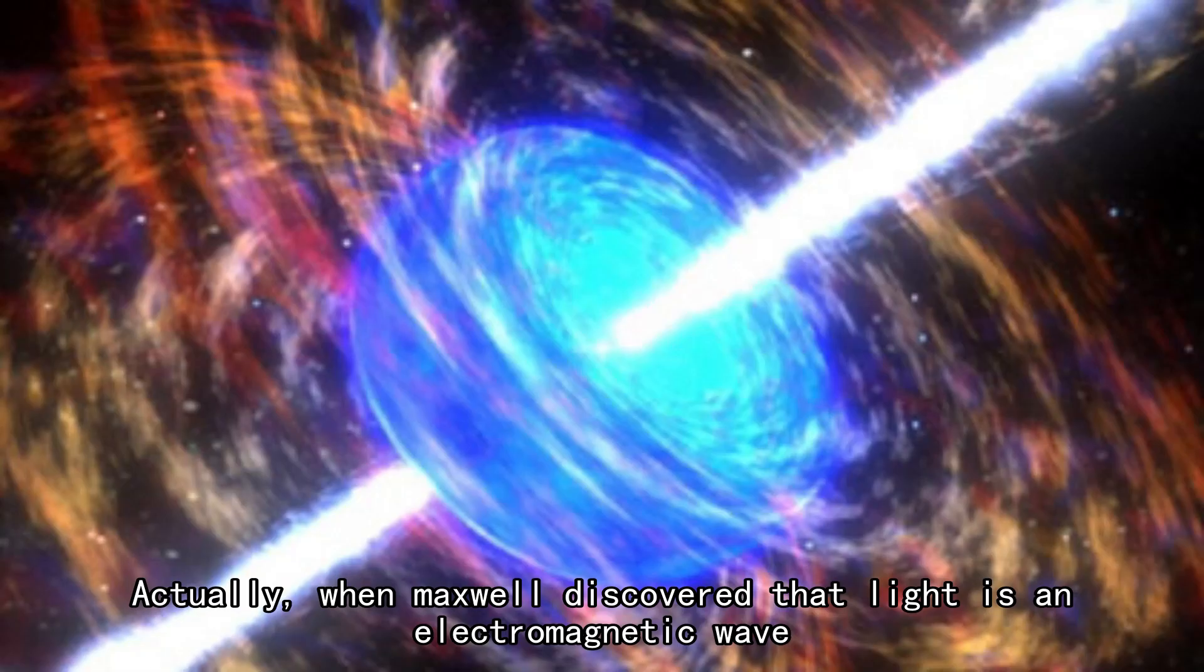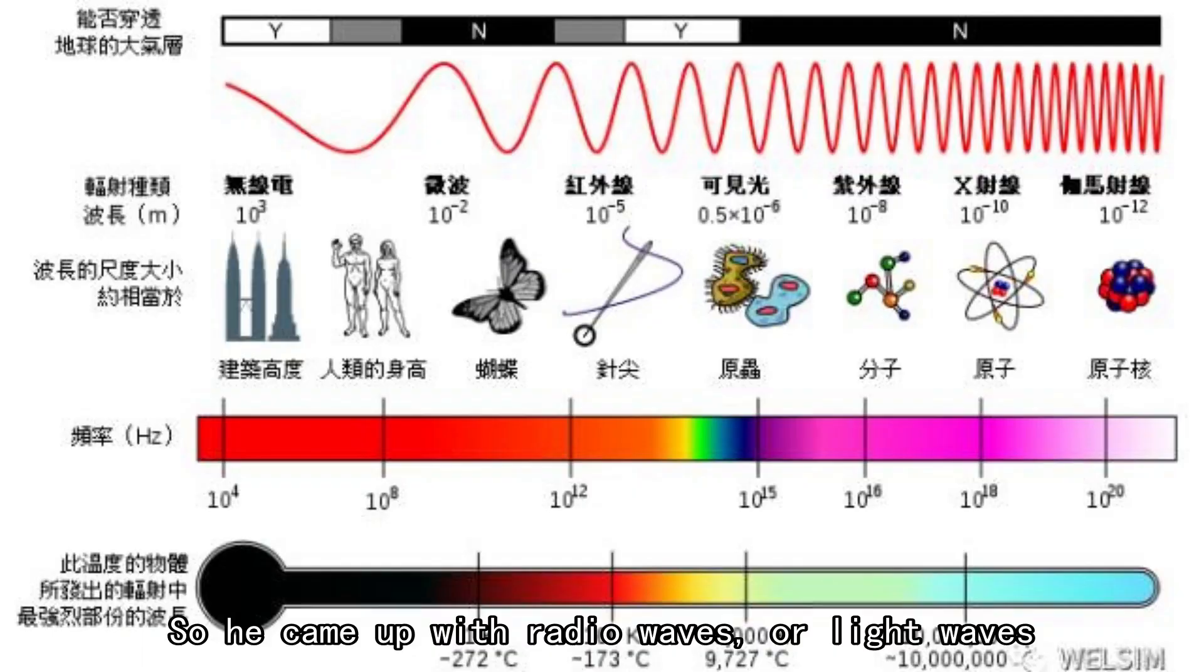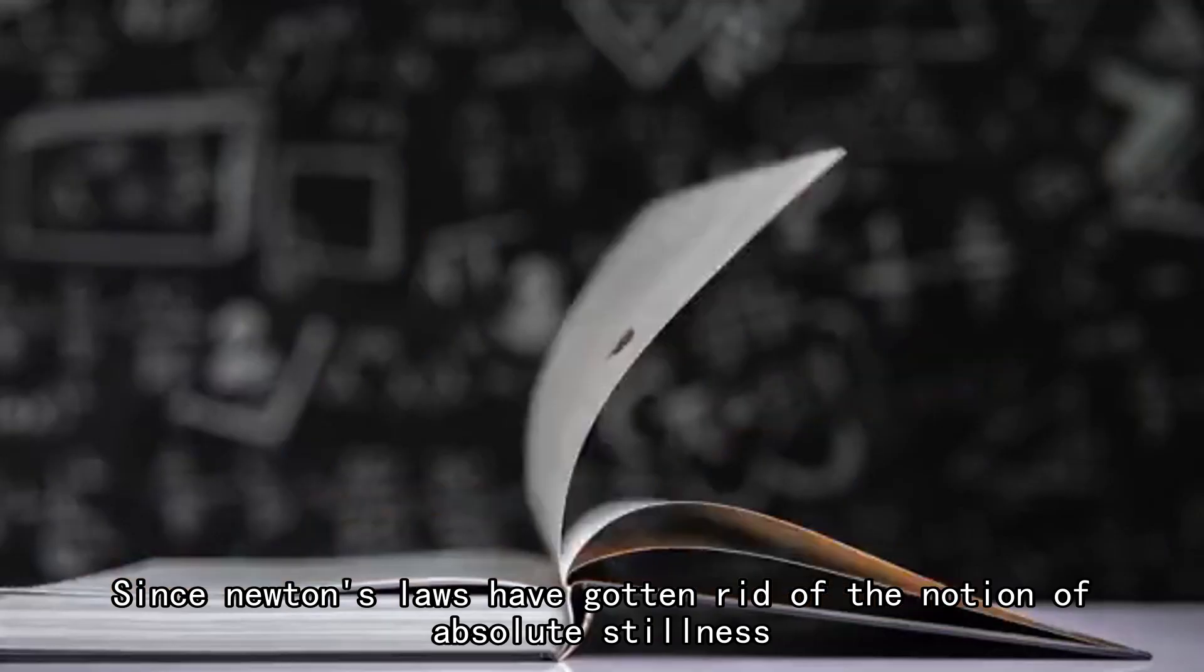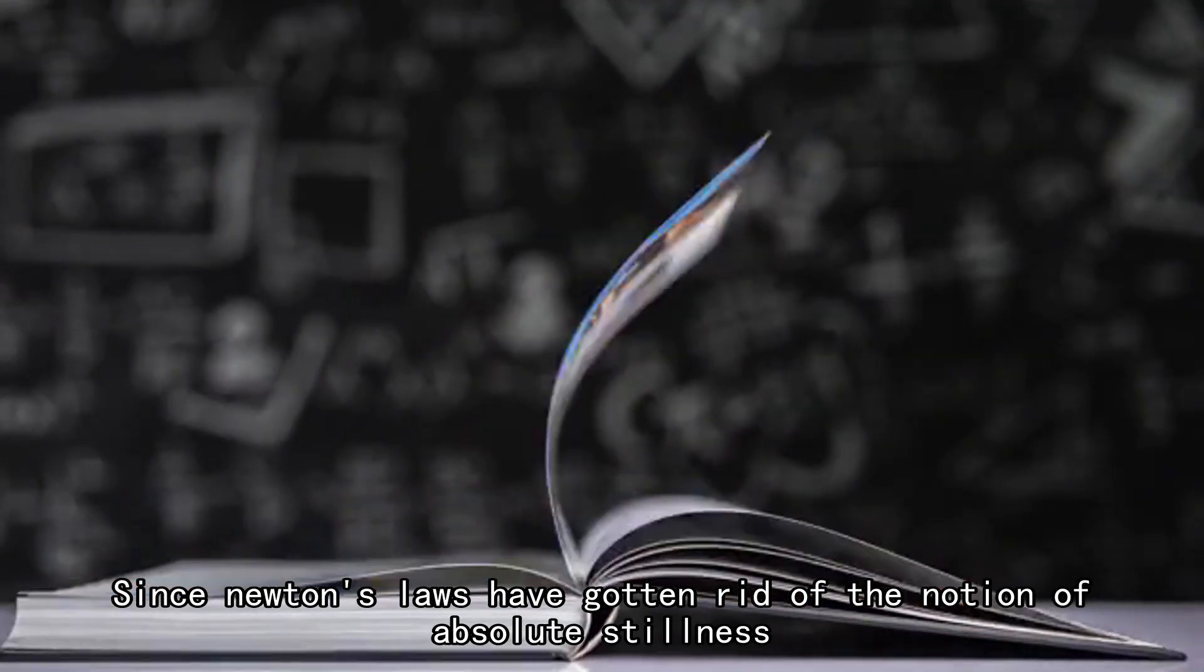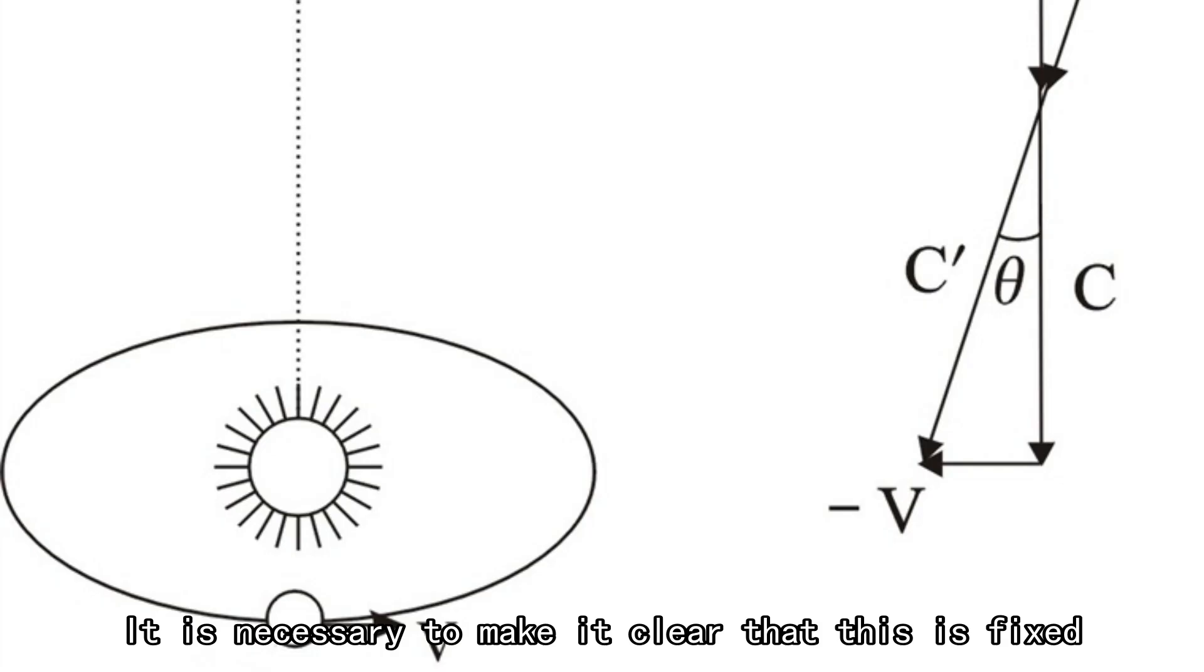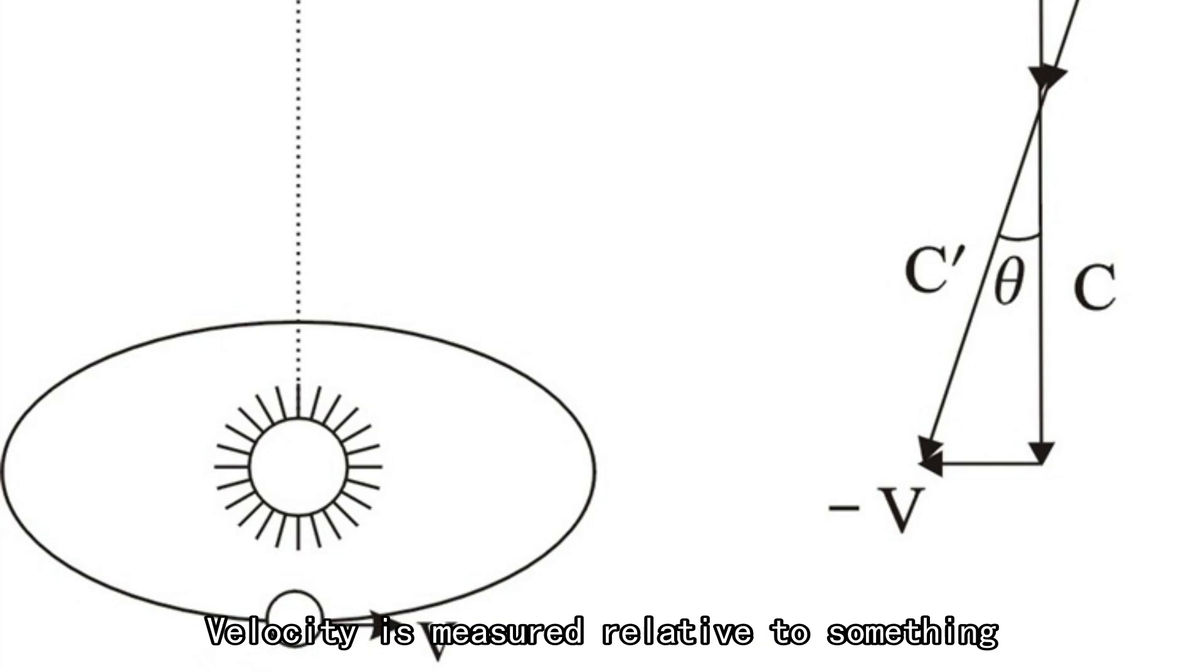Actually, when Maxwell discovered that light is an electromagnetic wave, he came up with radio waves or light waves. It should travel at a fixed speed. Since Newton's laws have gotten rid of the notion of absolute stillness, if it is assumed that light travels at some fixed speed, it is necessary to make clear that this fixed velocity is measured relative to something.